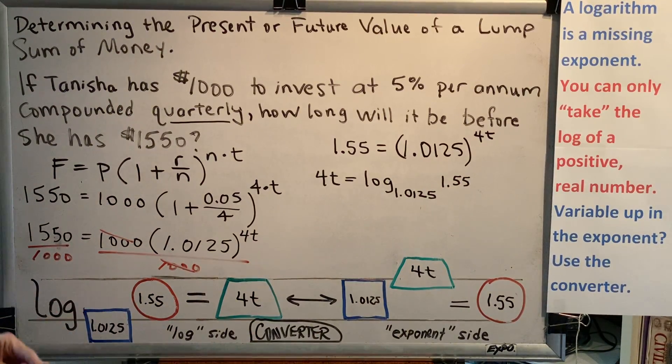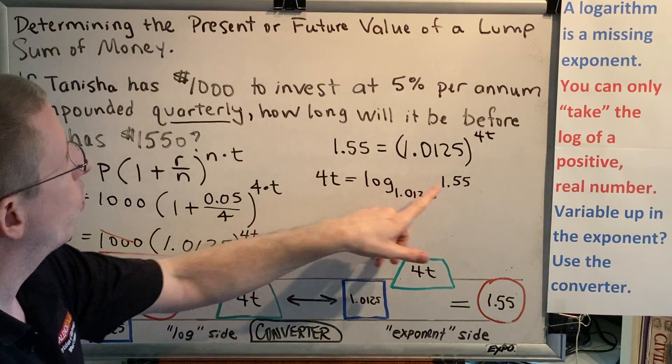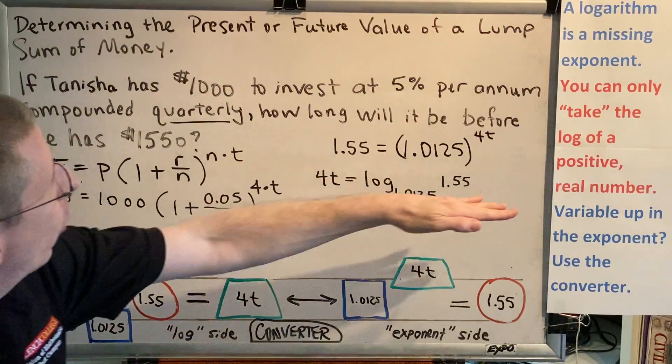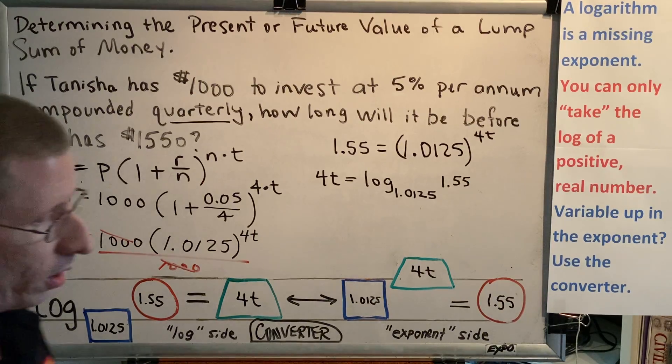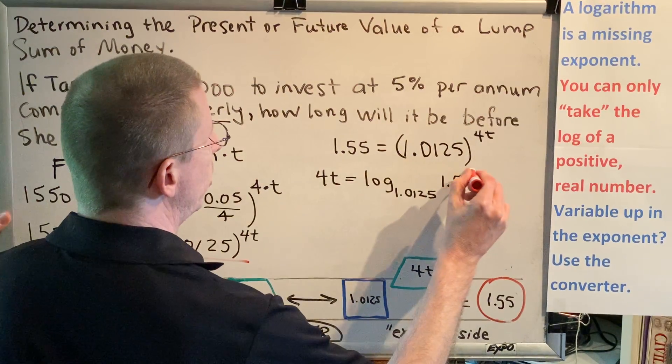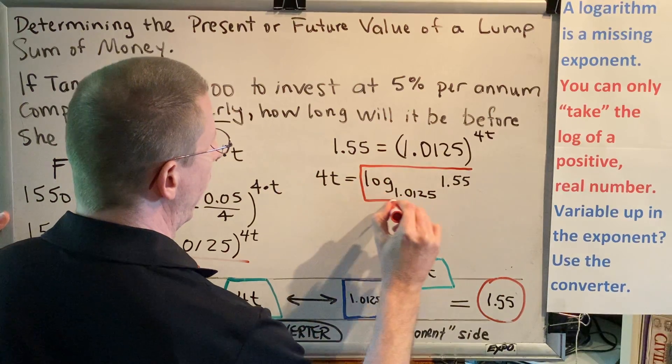Notice where these items are being written. The 4t, the word log, and 1.55 are all on the line. The 1.0125 is below the line. And now seems like a good time to remind you that every log has a brick.